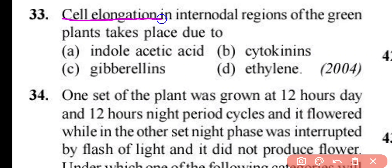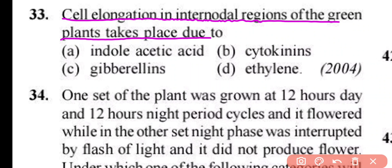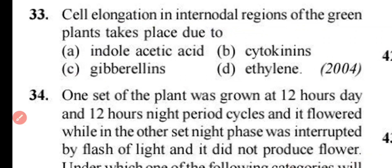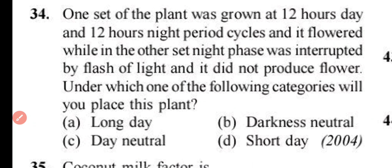Question number 33. Cell elongation in the inter-nodal region of green plants takes place due to: indole acetic acid, cytokinin, gibberellin, or ethylene. Correct answer is option C. Cell elongation in inter-nodal regions is due to the gibberellin hormone.